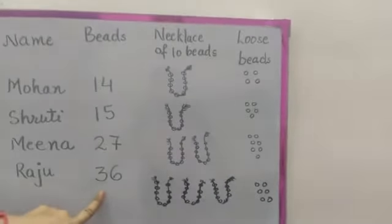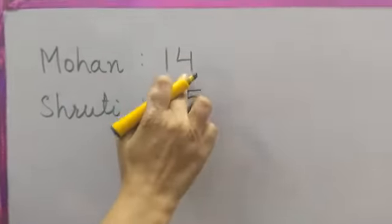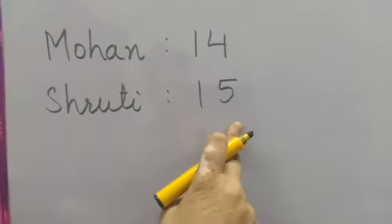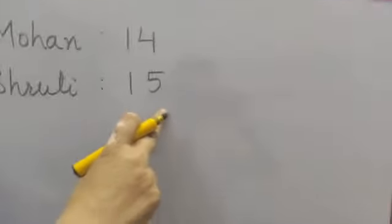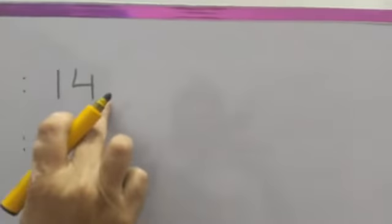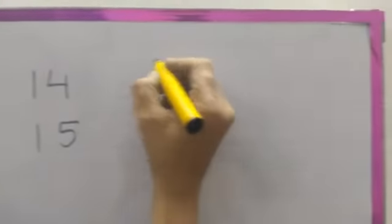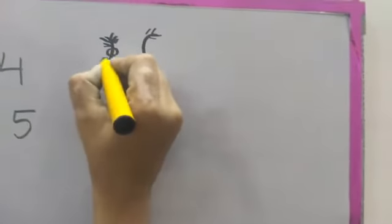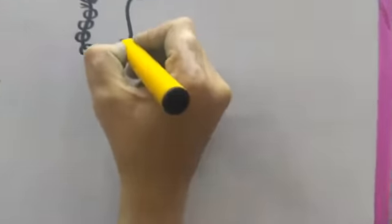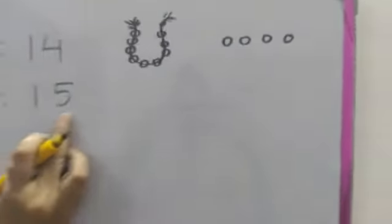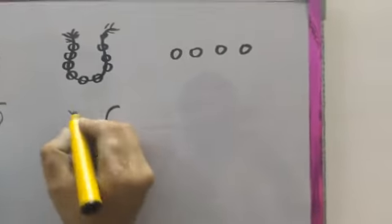Now we will do sums on addition. Mohan has 14 beads and Shruti has 15 beads. How many beads do they have altogether? Let's see: 14 means 1 ten and 4 ones, so 1 necklace of 10 beads and 4 loose beads. 15 means 1 ten and 5 ones, so 1 necklace of 10 beads and 5 loose beads.